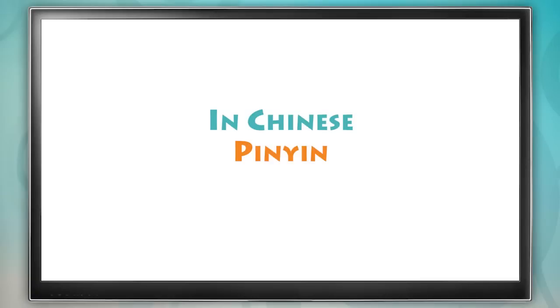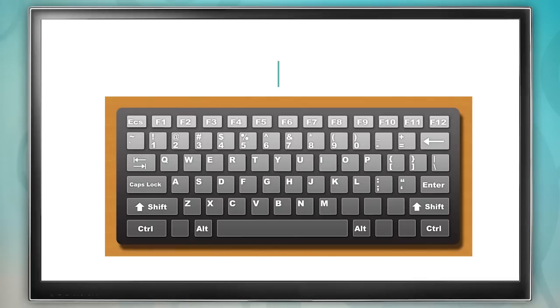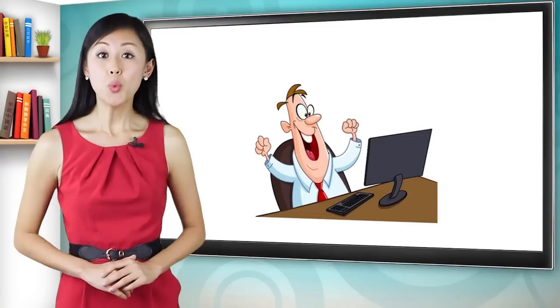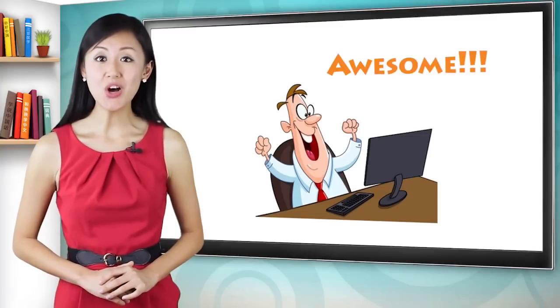So to type the word 我, you just need to touch the keys for W-O. You don't even have to worry about tones, you just input the letters. What happens next is truly awesome.